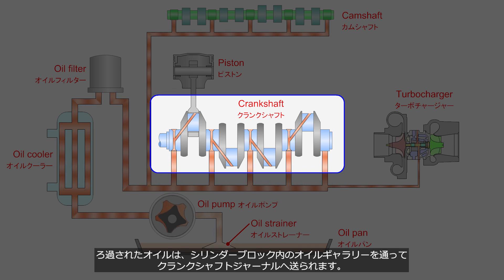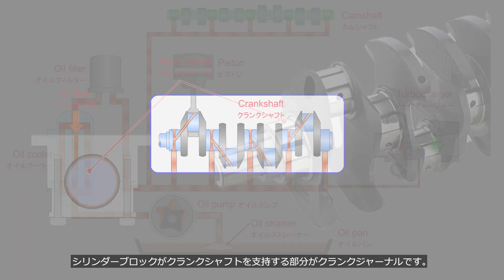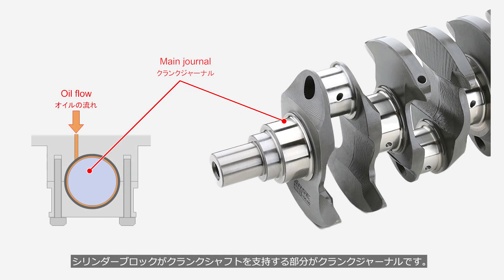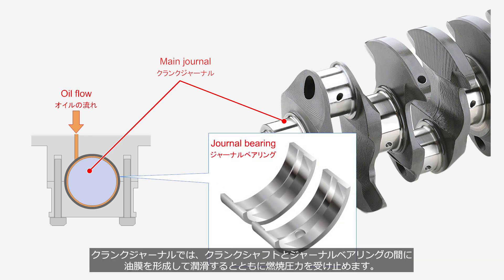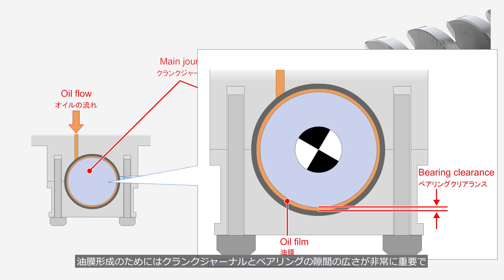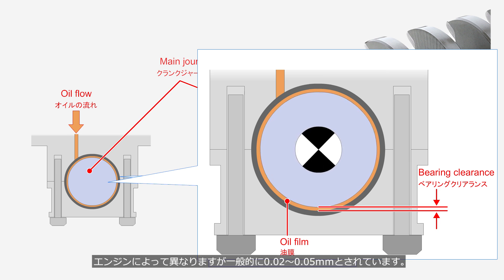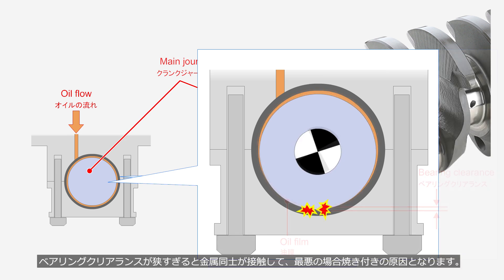The filtered oil is supplied through the oil gallery in the cylinder block to reach the crankshaft main journals. The parts of the crankshaft supported by the cylinder block are called main journals. The crankshaft is supported by an oil film between it and the journal bearing, ensuring lubrication while withstanding combustion pressure. The clearance between the main journal and the bearing is critical for proper oil film formation, generally in the range of 0.020–0.05 mm. Excessively small bearing clearance can cause metal surfaces to come into contact, potentially resulting in a serious seizure.